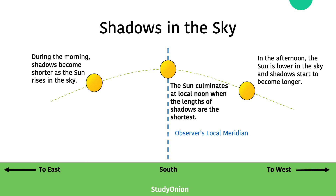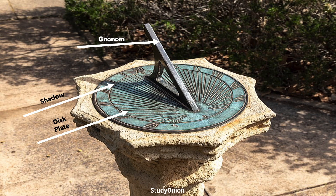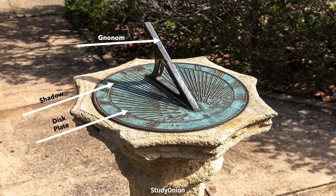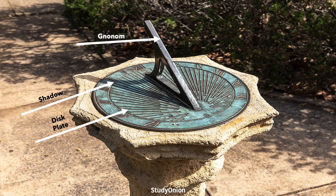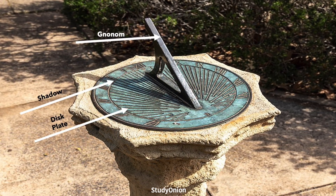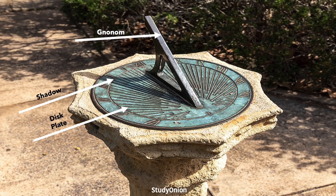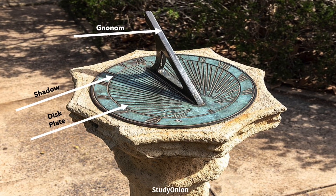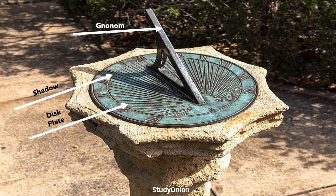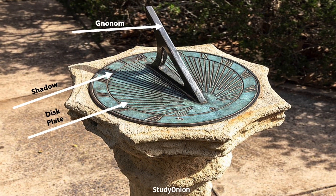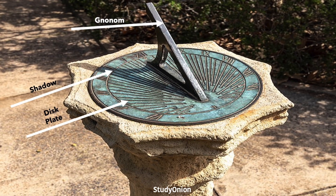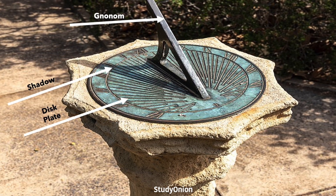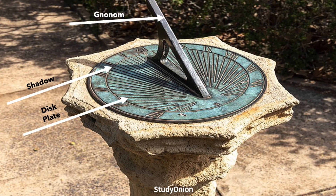Now let's take a look at a sundial and label some of the parts. The greenish plate on the sundial is known as the disc plate, and that is where the shadows are projected from the gnomon. The gnomon is the part of the sundial which projects the shadows onto the disc plate, allowing for the time to be read. By projecting the shadow onto the disc plate — which has time labels similar to a clock — you can use the shadow almost as a dial to read off the disc plate.